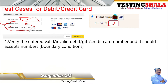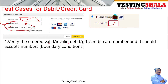The first test case we should write is to check for a valid debit card, gift card, or credit card by entering valid card details — it should accept those cards without any issues, considering all boundary conditions. For example, a Visa card should start with a certain number, and Mastercard numbers will start with a certain number; all those validations should be covered.